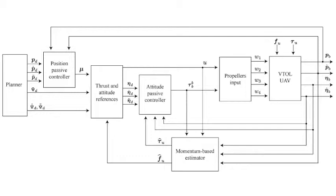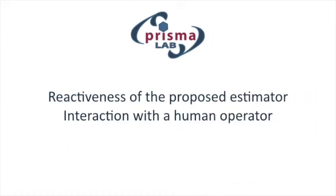An estimator of external forces and moments acting on the aerial platform, based on the momentum of the system, is employed to compensate the effects of external disturbances and unmodeled aerodynamic effects. This arrangement allows the UAV to perform hovering, tracking, and aerial manipulation tasks in unstructured environments.